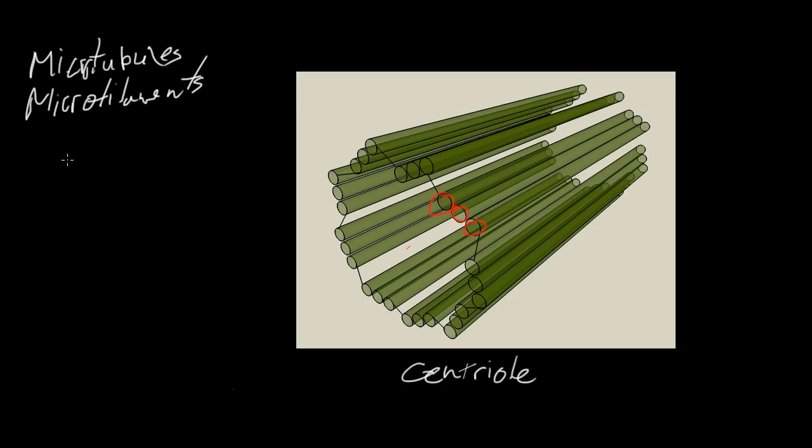So the centriole, and as well as the spindle fibers, is what happens in cytokinesis, so cell division. It's kind of, when the cells are like this, it's pushing one cell against the other, forcing it to separate on both sides.